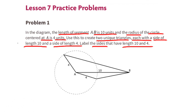Here are two triangles. For the top triangle, since the radius is 4 units, the side length highlighted in yellow would be 4 units, and since the length of segment AB is 10 units, that line segment would be 10 units. Connect the ends with a straight line to represent the third side length. For the bottom triangle, the radius gives a side of 4 units, segment AB gives 10 units, and we connect the open ends to form the third side.